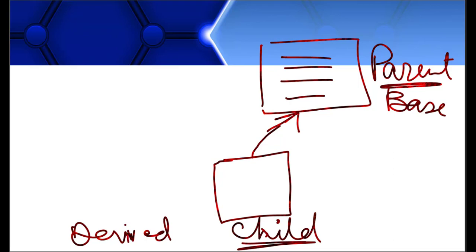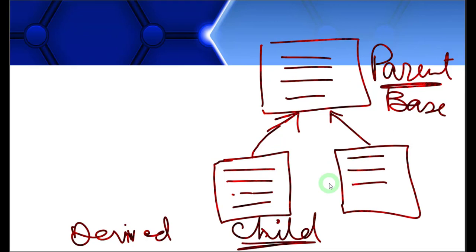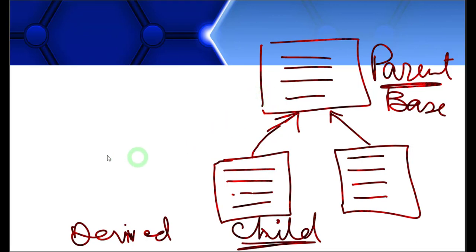We can derive as many classes as we want from the parent class. The child class will inherit all the public or protected properties of the parent class. Child classes will inherit the attributes and member functions of the parent class. This is just a quick summary — I'm not explaining inheritance in object-oriented programming in detail. Let's see how we perform inheritance in Python.